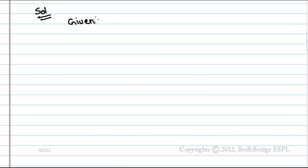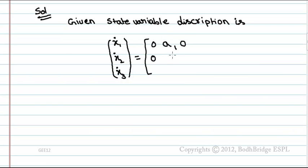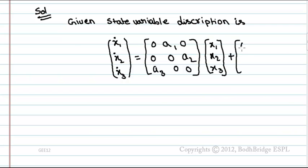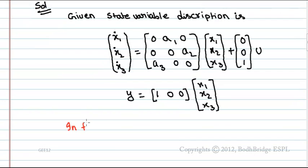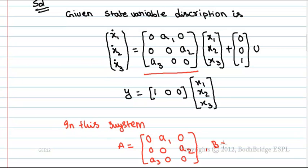Solution: The given state variable description has A = [0, a1, 0; 0, 0, a2; a3, 0, 0], B = [0, 0, 1]ᵀ, and C = [1, 0, 0].